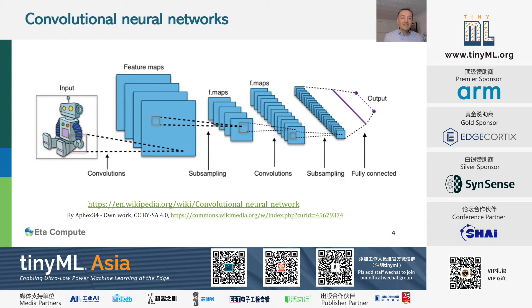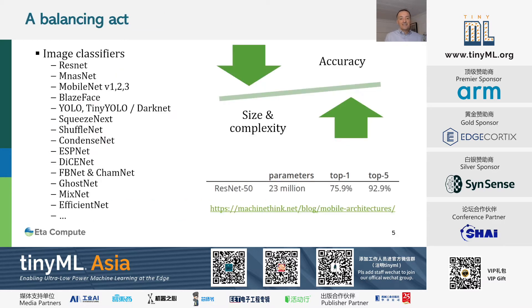A CNN extracts each feature through layers, from the finer to the coarser features, to finally identify the object. If you want to know more, there is lots of literature about CNN, including a Wikipedia page. Developing a vision algorithm for the edge is a balancing act. You need to find an image classifier model that will provide good accuracy, but is light enough to fit in your hardware.